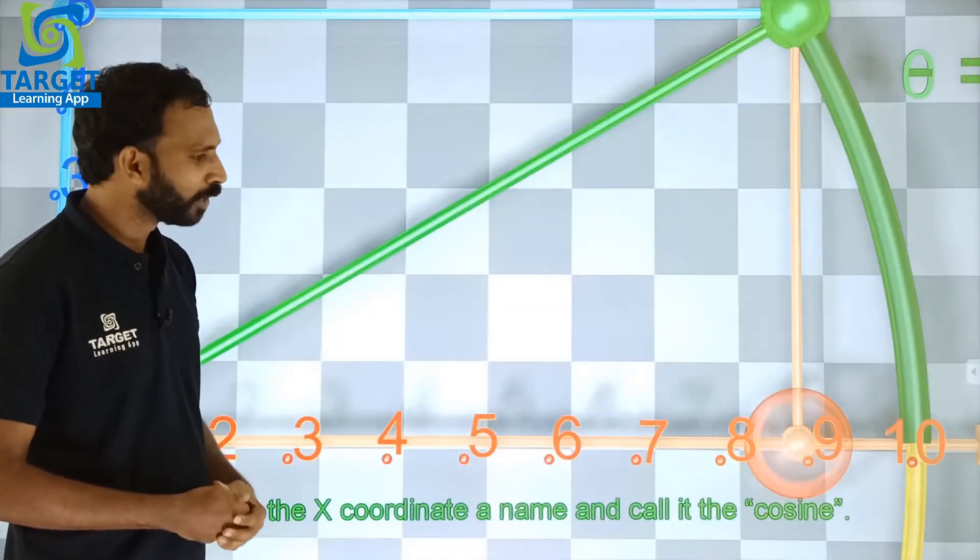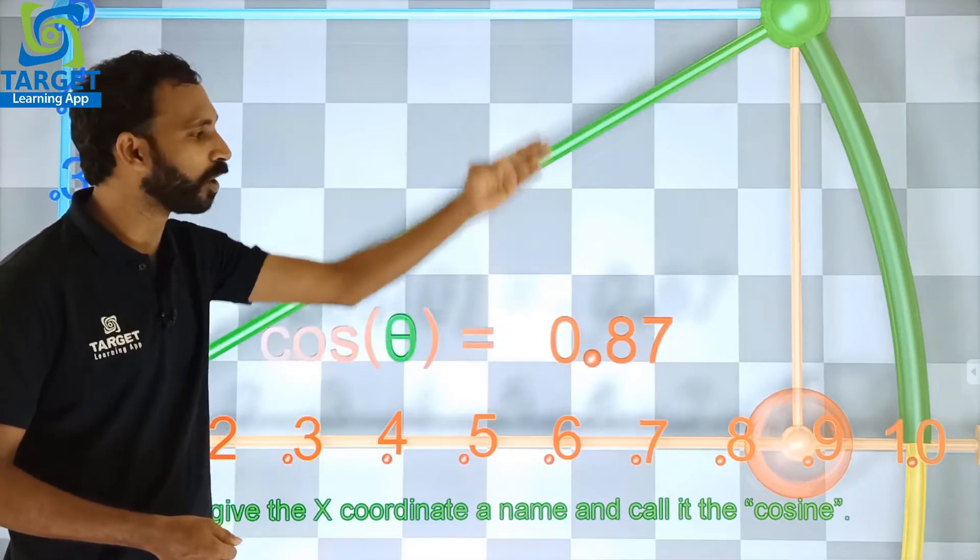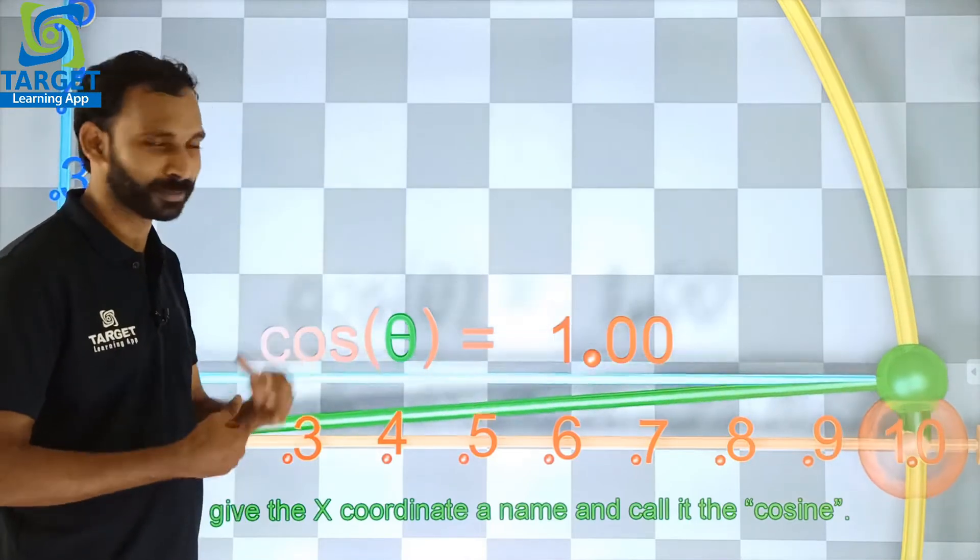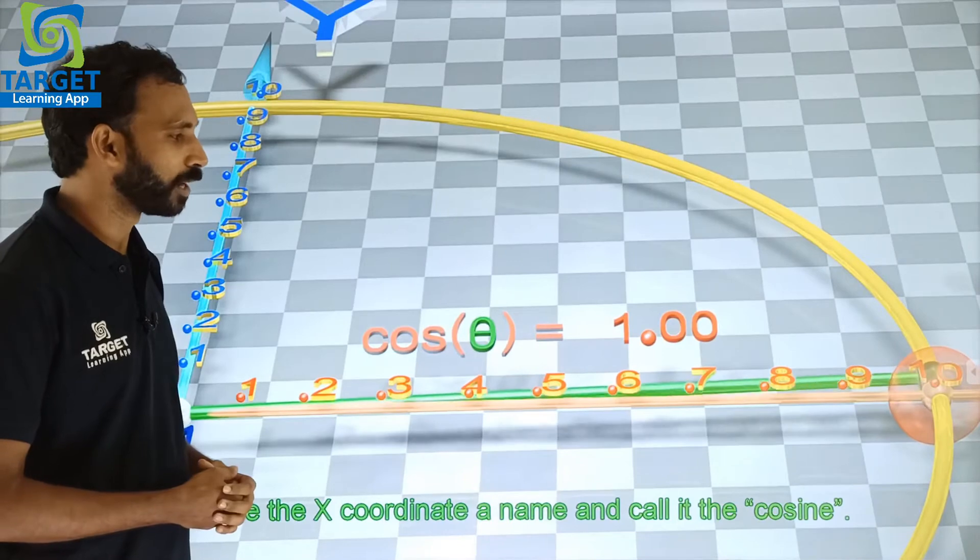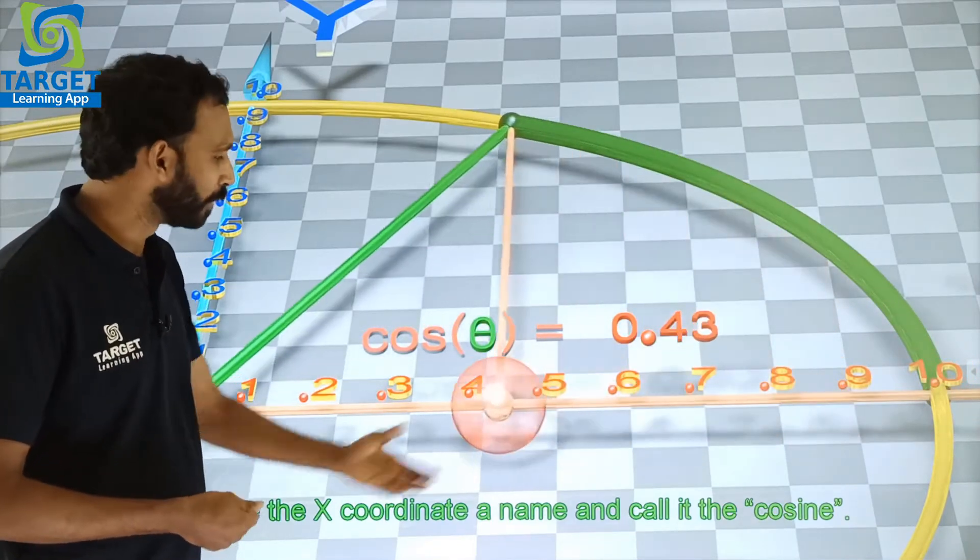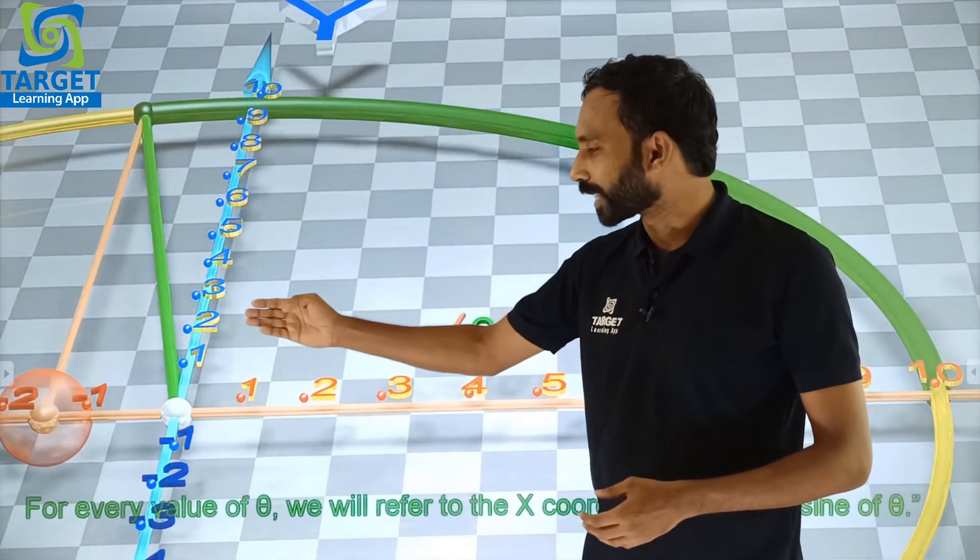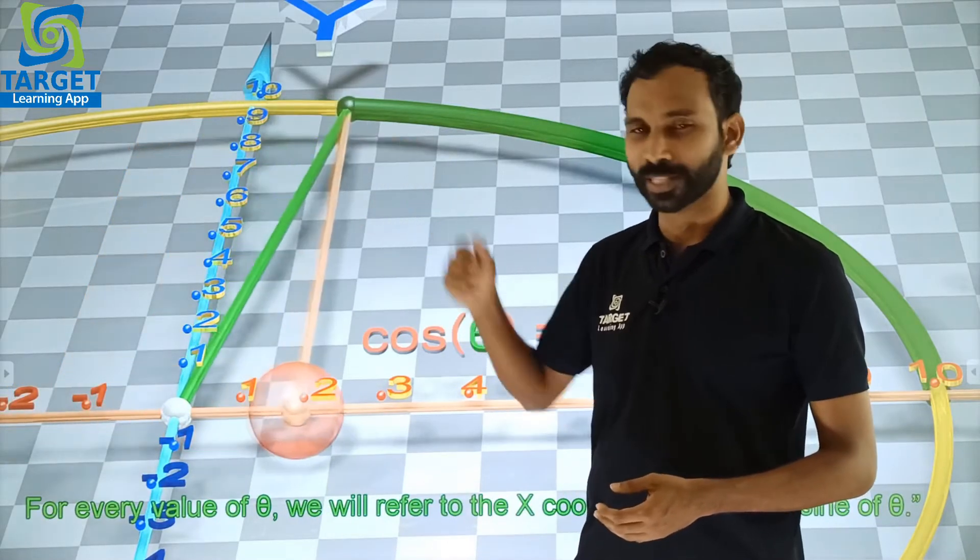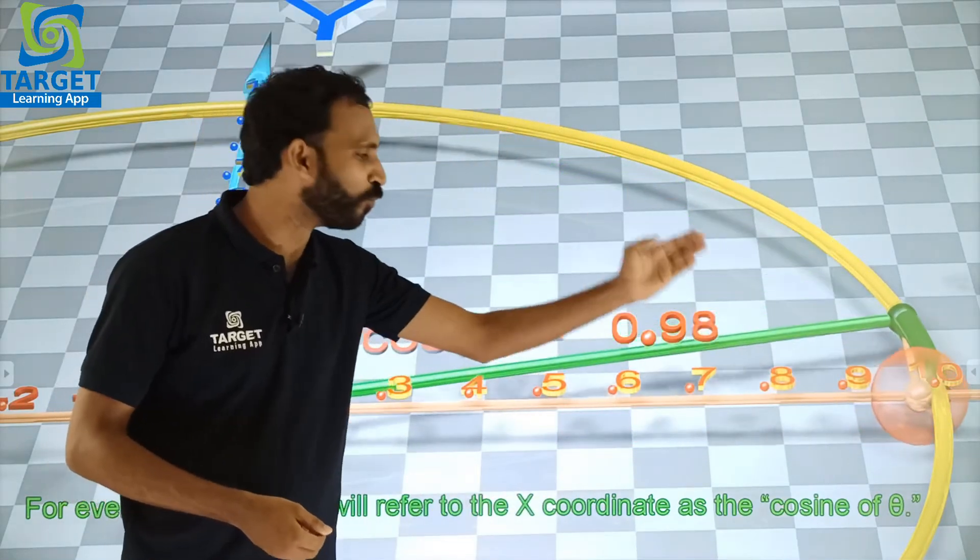Then now you can see the different values of x-coordinate of our green ball. That means the different values of cos theta. Look at this. The different values of cos theta corresponding to the different values of angle theta. That means it can be decimal, it can be a negative number, it can be 0, and finally it can be the value 1.